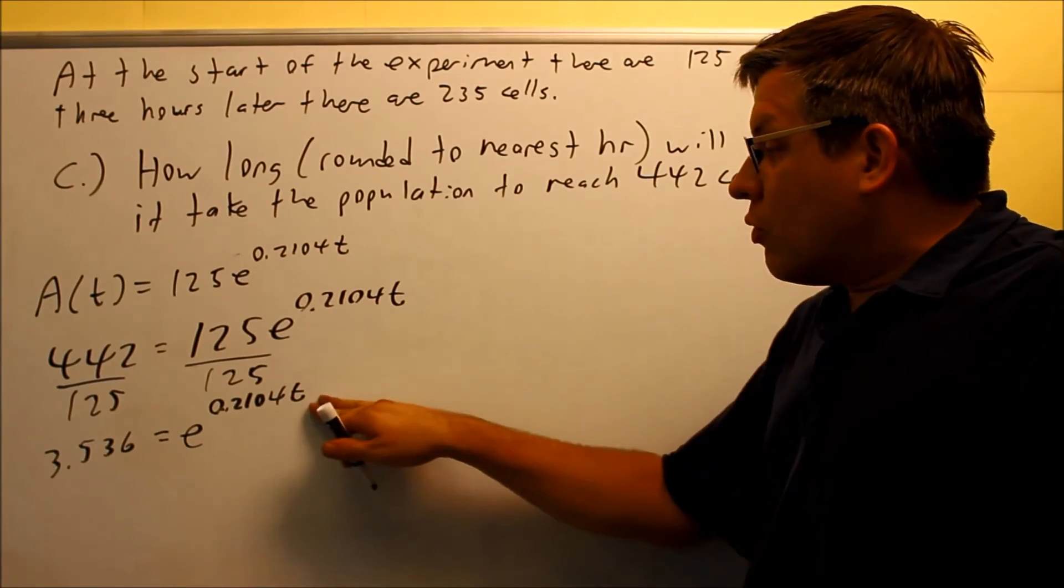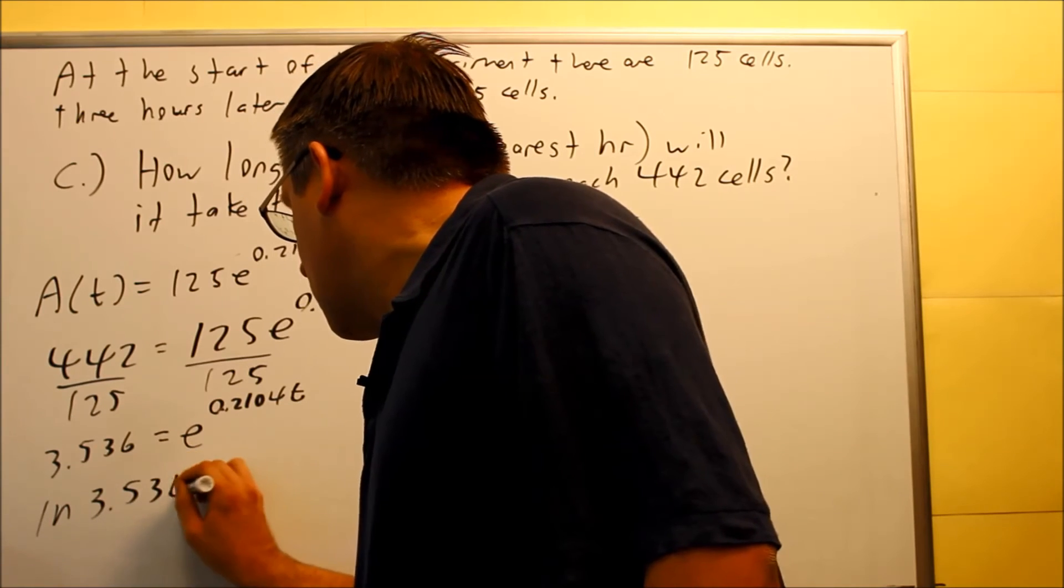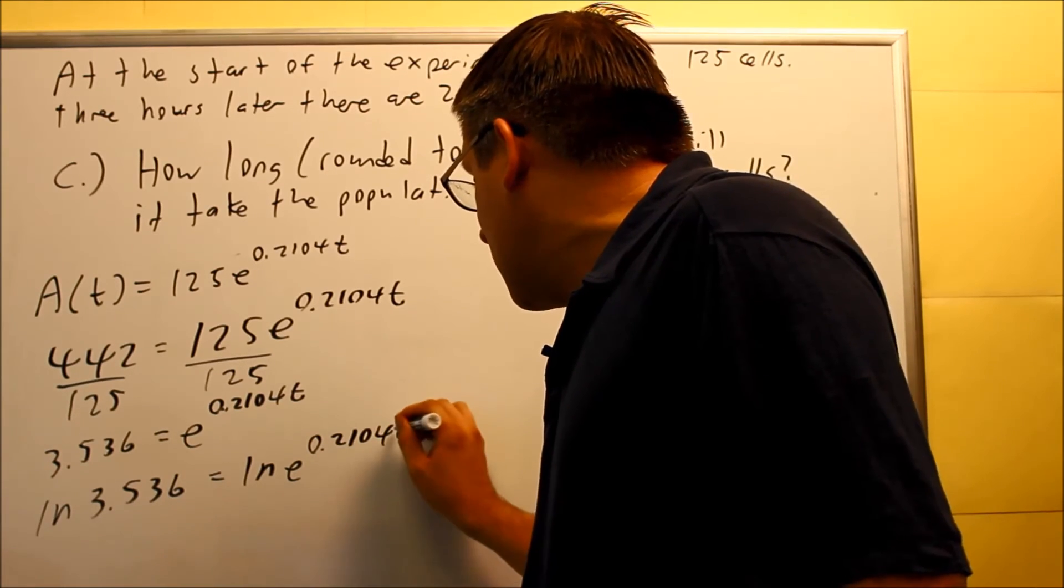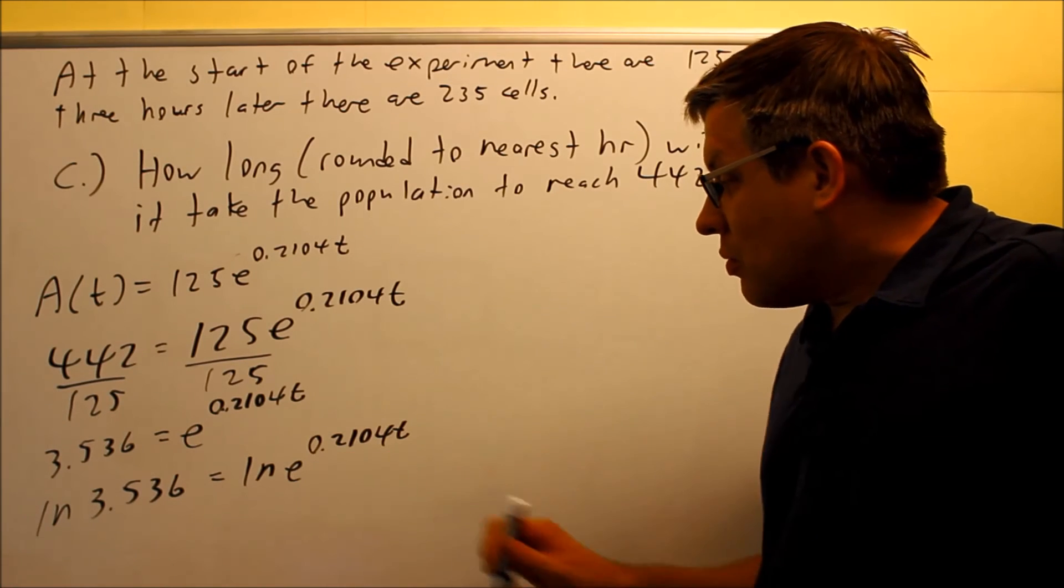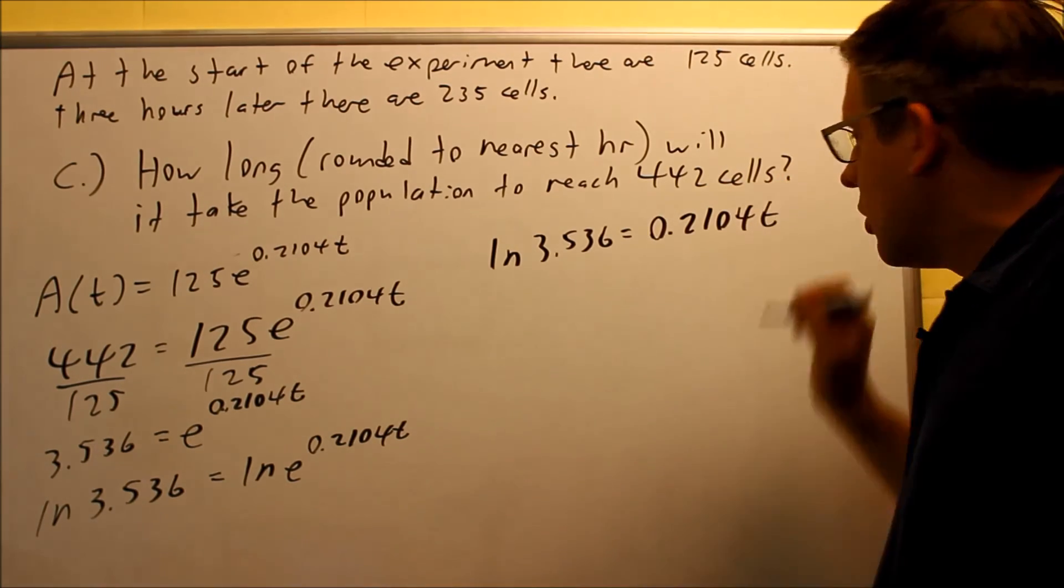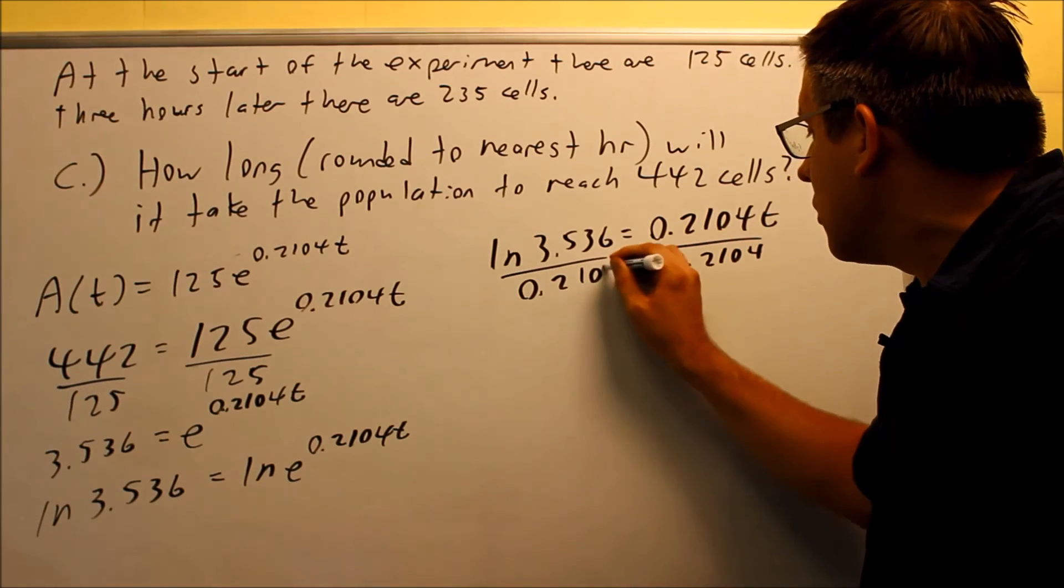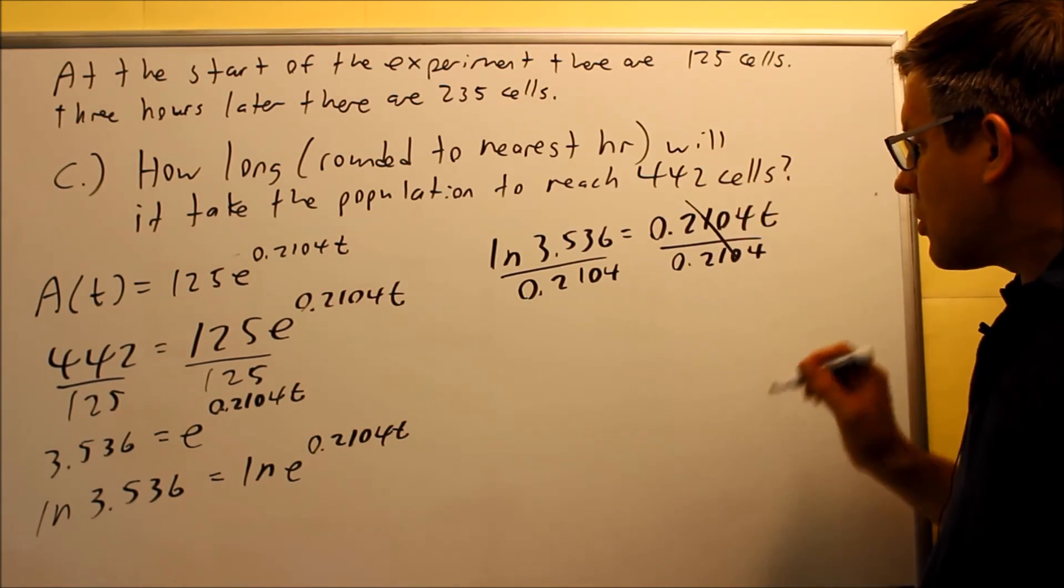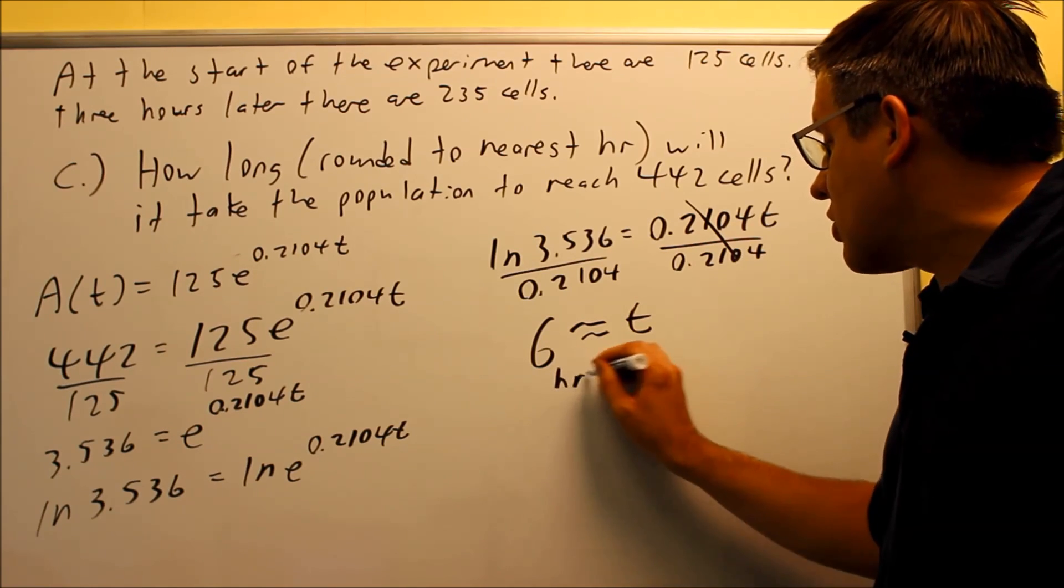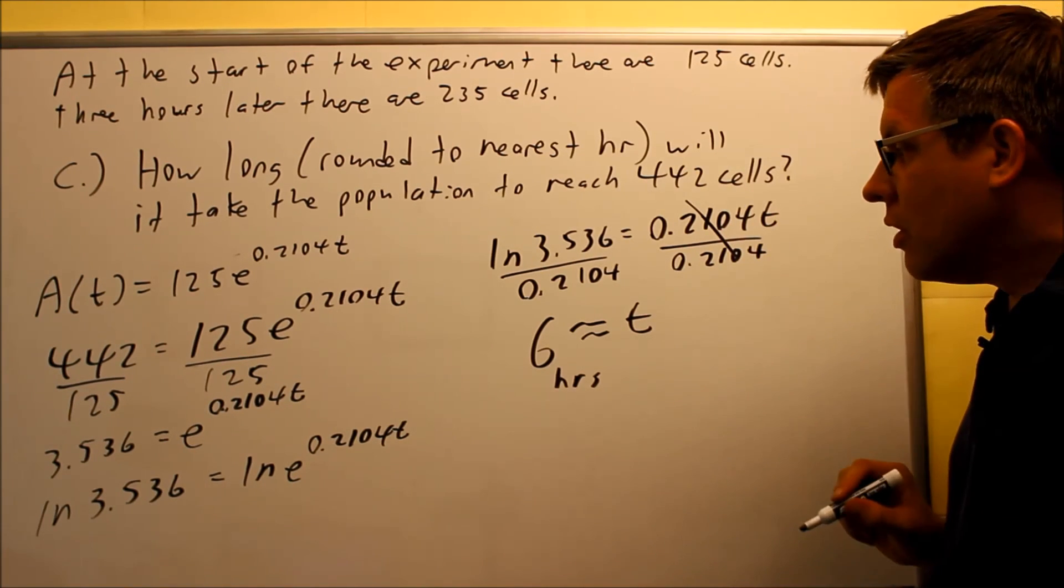We want to get rid of the e so we can get the exponent by itself. To do that, you're going to put a natural log on both sides. So ln 3.536 is going to equal ln e to the 0.2104t. Whenever you have ln and e together, that's going to disappear. So you end up with ln 3.536 equals just the exponent part, 0.2104t. Now we want to divide both sides by 0.2104. That's our k value. And when we divide by this, this is going to cancel. And this part we can put into a calculator and it's about equal to 6. So that's going to be 6 hours is what you're going to get for your time. So it'll take approximately 6 hours for that population to grow all the way up to 442 cells.